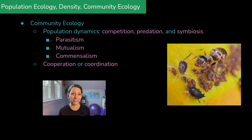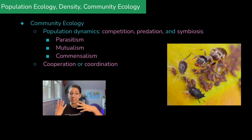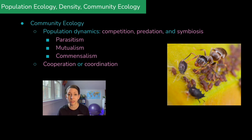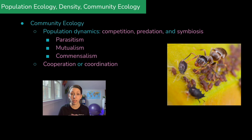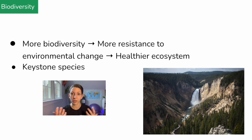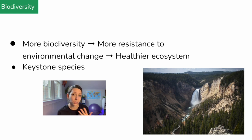When we talk about interactions of communities, there are different types including predation, competition, and different types of symbiosis. On the AP Bio exam, you might be introduced to an example of a relationship between organisms and have to identify what that relationship is. Make sure you can recognize a parasitic relationship where one organism is harmed and the other benefits, mutualistic relationships where both organisms benefit, and commensalistic relationships where one organism is helped and the other is relatively unaffected. Remember that the more biodiversity within a community or ecosystem, the more resistant it is to environmental change and the healthier the ecosystem.